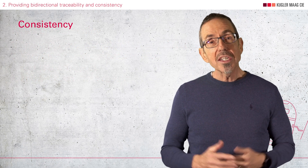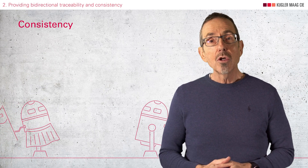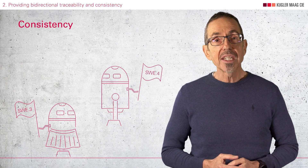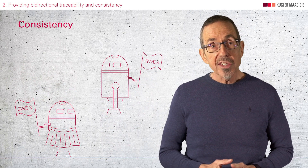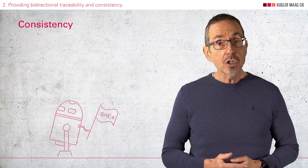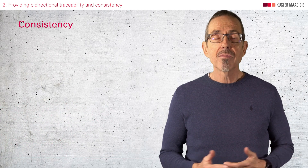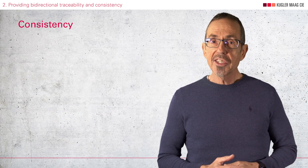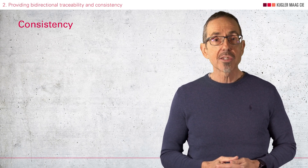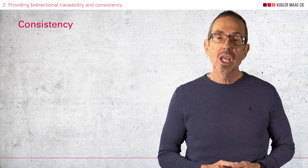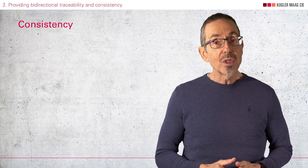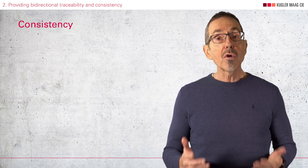What does consistency mean? For example, for the relationship between a unit in a detailed design and the corresponding test spec, consistency would require that the unit is linked to the correct test and not to the test of another unit. This test must be suitable to test the unit completely. If this is not the case, additional tests must be linked. Consistency also requires that the tests actually test the unit correctly — in other words, no faulty tests.